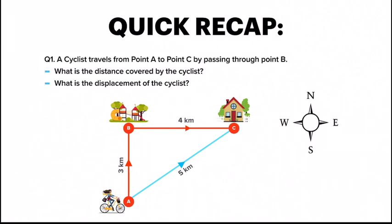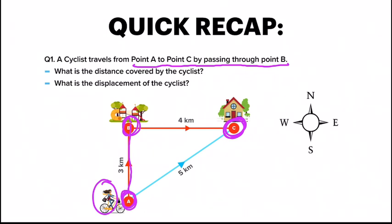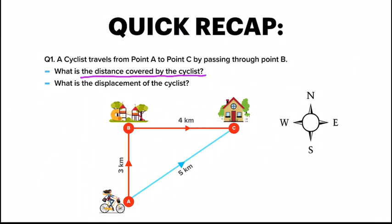A cyclist travels from point A to point C by passing through point B. So the cyclist passes from point A, travels from A to B, then from B to C. A is the starting point, C is the ending point, and B is the middle point. The question asks: what is the distance covered by the cyclist and what is the displacement covered by the cyclist? Pause the video and take two minutes to answer this.